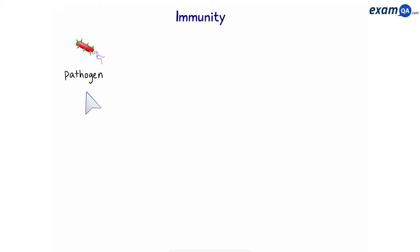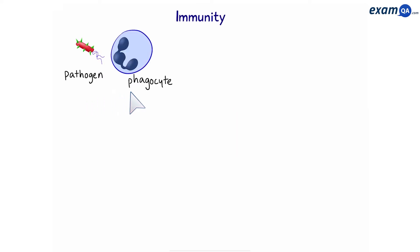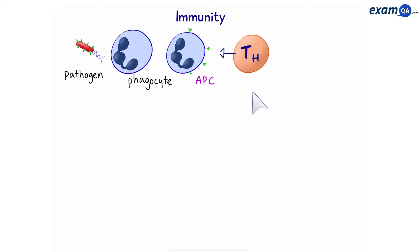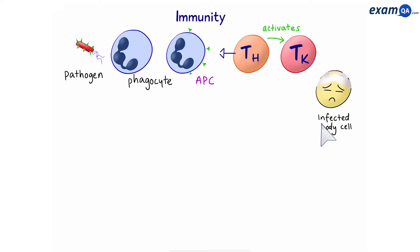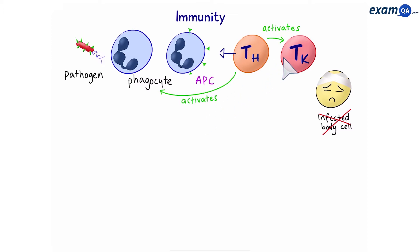The first time a pathogen enters the body, this activates a white blood cell called a phagocyte. The phagocyte consumes the pathogen and turns into an APC, an antigen presenting cell. The APC then activates a T helper cell. Once activated, this T helper cell will activate T killer cells which will go and destroy infected body cells, activate more phagocytes to go and look for more pathogens and destroy them, and also turn into T memory cells.